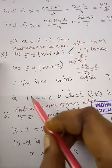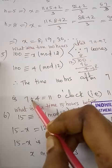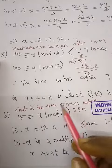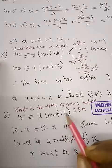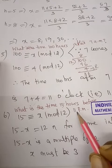15 hours before, you convert to modulo 12 because we're using a 12-hour clock. Every 12 hours repeats.